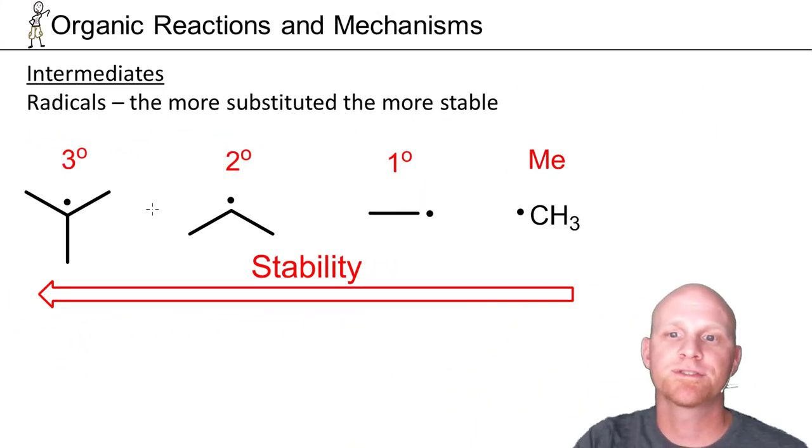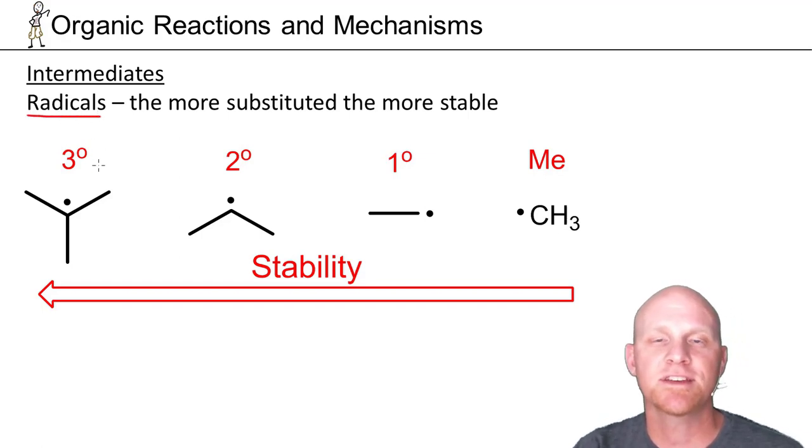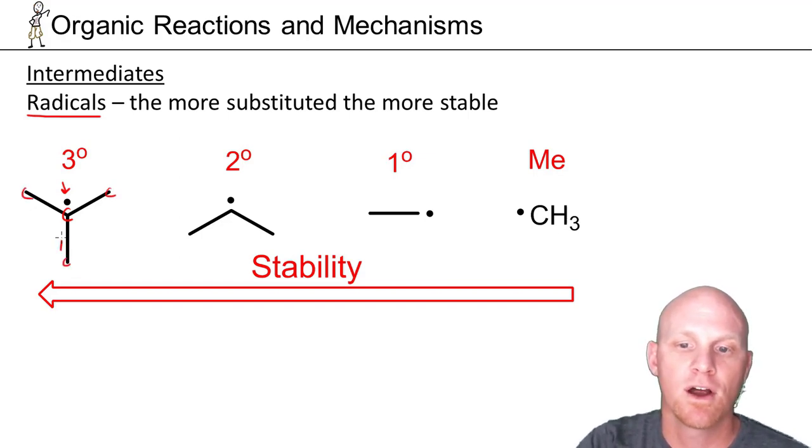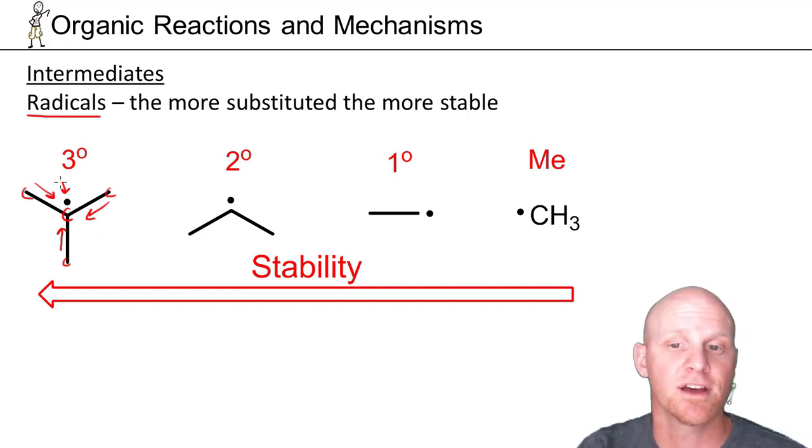The next type of intermediate we'll see are radicals. Radicals occur when you have a single unpaired electron, and these follow the same trend as carbocations. With a single unpaired electron, there's no overall formal charge on that carbon, but we would still look at it as being electron deficient because it does not have a filled octet. The more carbon atoms it's bonded to, and these carbons are donating electron density towards that central atom by hyperconjugation yet again, making it more stable, sharing that electron deficiency with the three outside atoms. The more carbons it's bonded to, the more stable the radical.